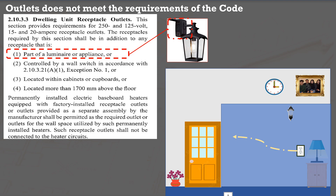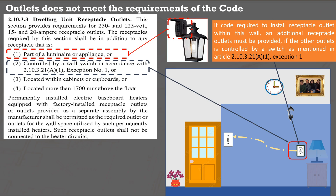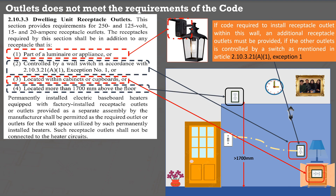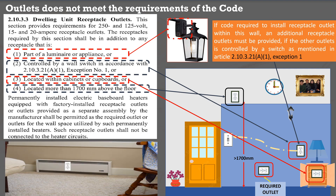If you provide an additional outlet but it is controlled by a wall switch under section 2.10.3.21a.1, exception number 1, this outlet also does not meet the requirements (bullet number 2), and an additional outlet is still required. Further, if an outlet is installed inside a cupboard or cabinet (bullet number 3), it does not meet the requirement. If an outlet is installed at more than 1,700 mm in height (bullet number 4), it also does not meet the requirements, and an additional outlet is required. However, permanently installed electric baseboard heaters with factory-installed receptacle outlets, or outlets provided as a separate assembly by the manufacturer, shall be permitted as required outlets.